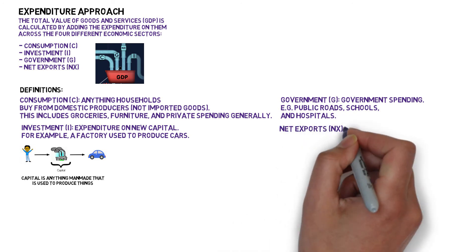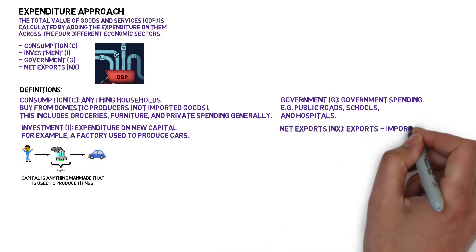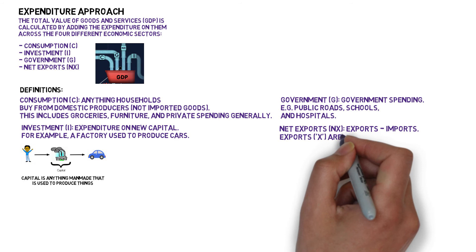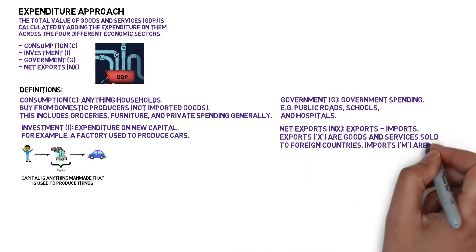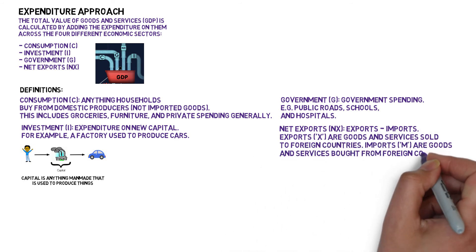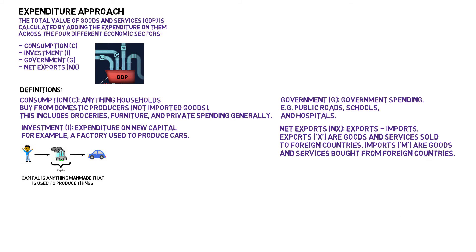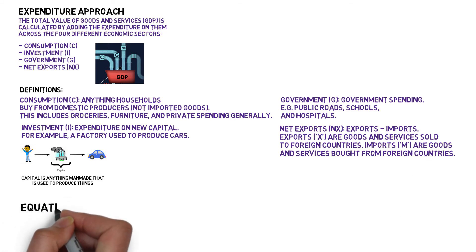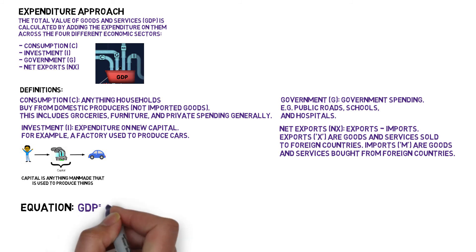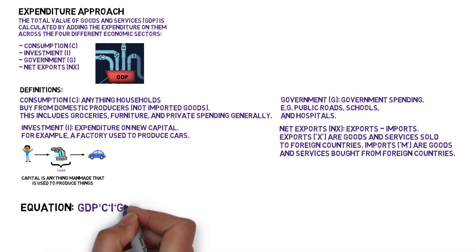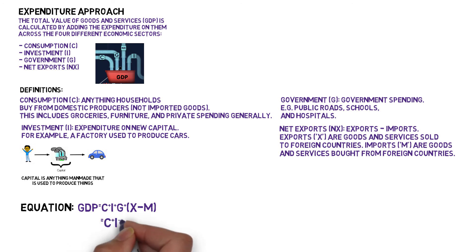And finally, net exports is exports minus imports. Exports are the goods and services sold to foreign countries, and imports are the goods and services bought from foreign countries. So if we add expenditure from the four sectors of the economy together, we get our final equation: GDP equals consumption plus investment plus government plus exports minus imports, or net exports.